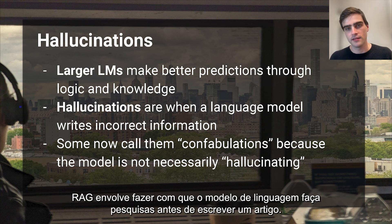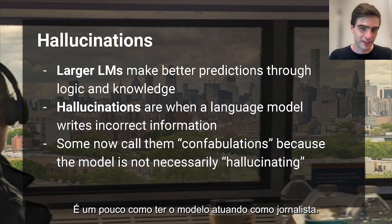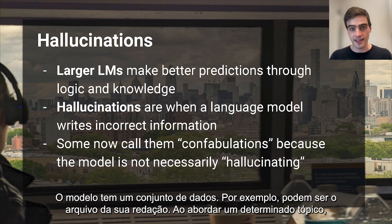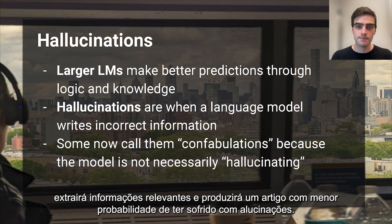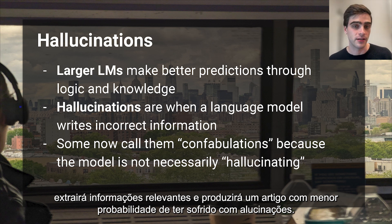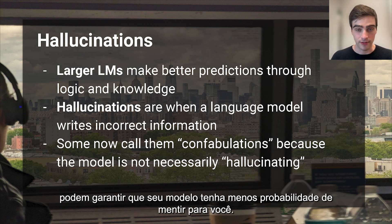Retrieval Augmented Generation involves having the language model do research before writing an article. It's a bit like having the model act like a journalist. The model has a dataset — for example, it might be the archives of your newsroom. When given a certain topic, it will go through all the articles and all the vetted, truthful information that exists in your archives, and it will pull relevant pieces of information and produce an article that is less likely to have been produced by a hallucination. Retrieval Augmented Generation and other similar technologies like LangChain and agents ensure that your model is less likely to lie to you.